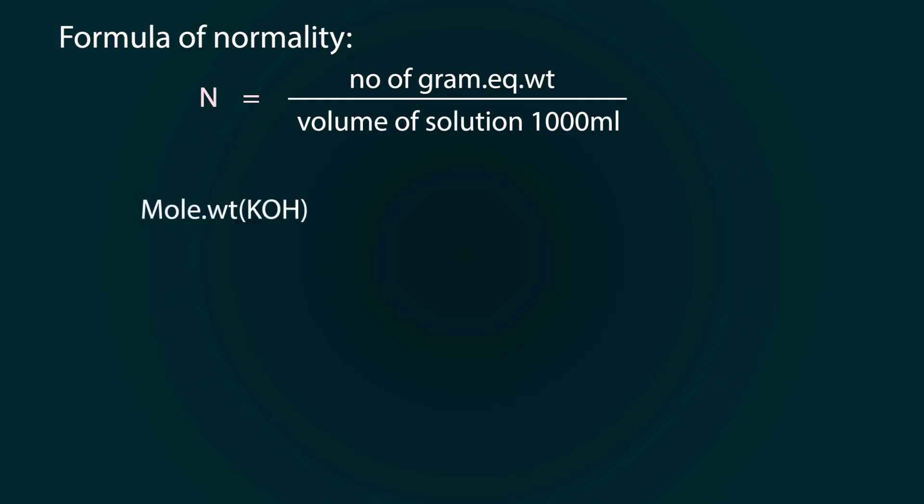Molecular weight will be equal to 39.1 for potassium plus 16.0 for oxygen plus 1.01 for hydrogen. So molecular weight is 56.11 per mole.